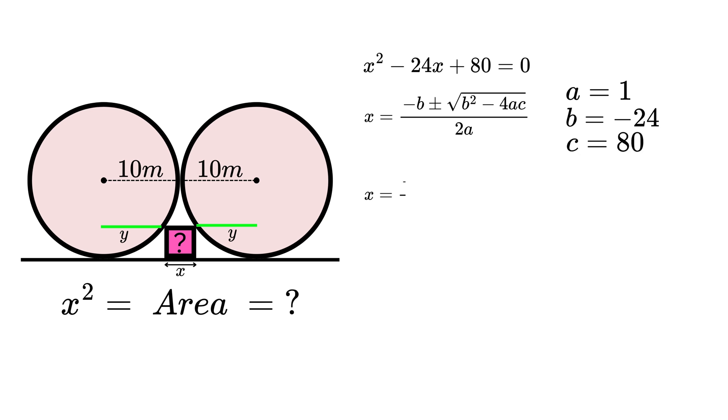When we plug the numbers in, we have x = (-(-24) ± √((-24)² - 4×1×80))/(2×1). Working through, we find that x = 12 ± 8, meaning that x = 20 or x = 4.